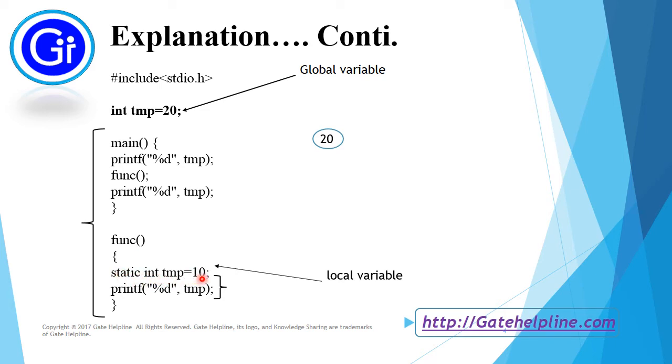So temp is initialized here to 10 and in this printf statement temp is printed. So this temp will check for the local variable, is there any local variable named temp. So yes we have a local variable int temp equals to 10. So here this temp will take the value as 10 and print that 10 value.